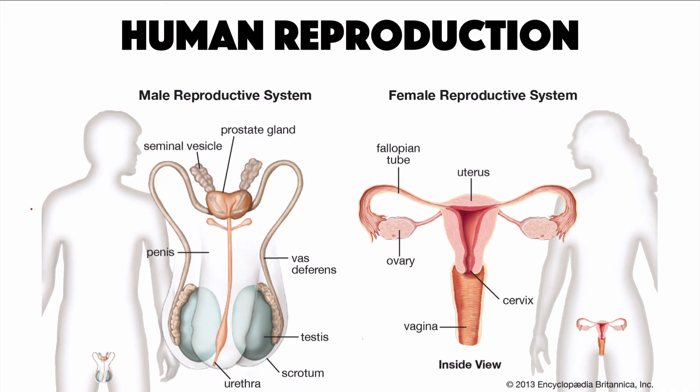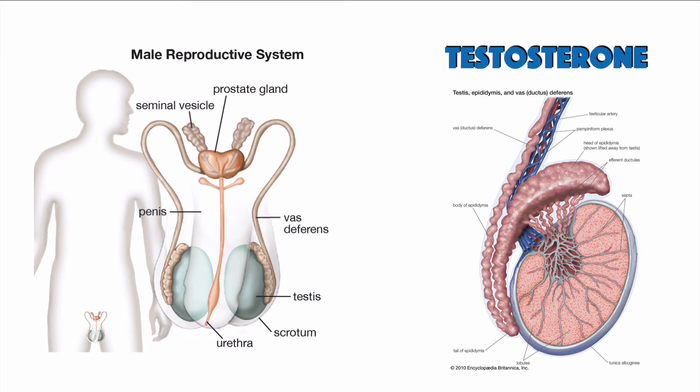We spent a lot of time talking about the female anatomy, so let's spend some time talking about the male reproductive system. Men have a hormone circulating in their bodies called testosterone. Testosterone controls characteristics such as the deepening of the voice, hair on the chest and legs, and body odor. But most importantly, testosterone controls the production of sperm, which is done in two organs called testes that sit outside the body. Men are always producing sperm, and no two sperm cells are alike. They are released in mass, but only one can get into the egg and fertilize it.